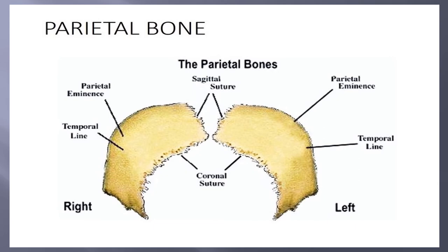The parietal bone is a paired bone. It forms the roof and lateral wall of the cranium. The parietal bone articulates with the frontal bone by the coronal suture, and posteriorly with the occipital bone by the lambdoid suture. Laterally it articulates with the temporal bone and sphenoid bone through the squamous suture. The two parietal bones articulate with each other via the sagittal suture.